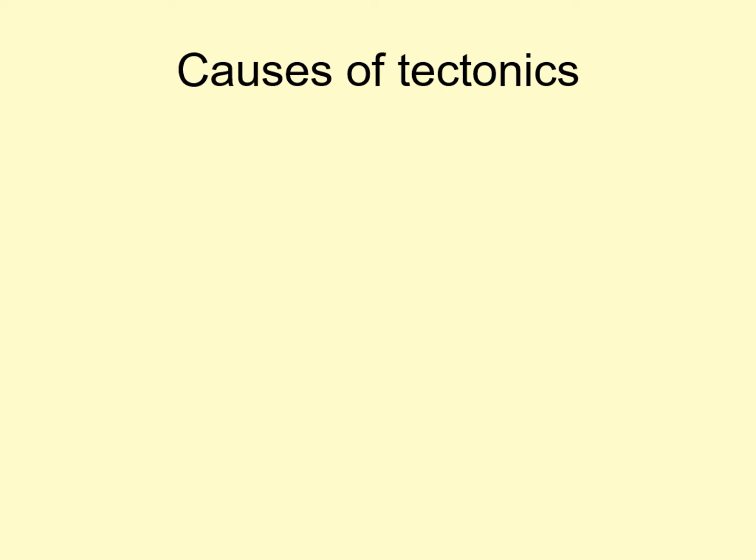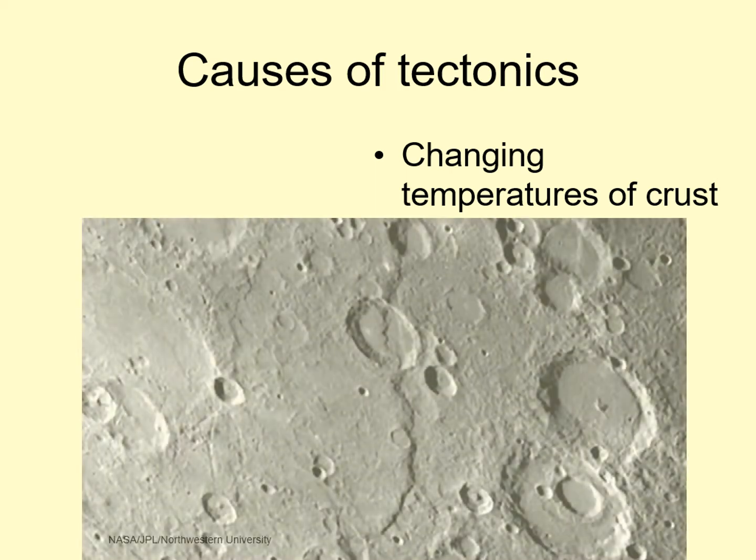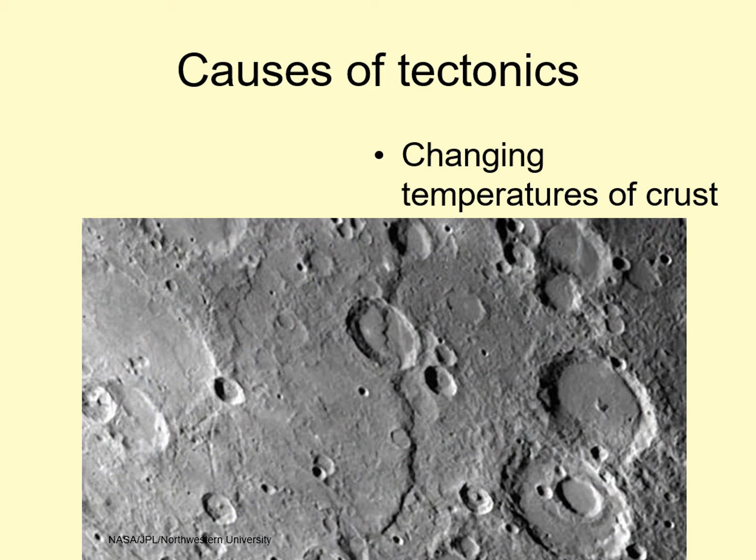Like volcanism, tectonics is related to the internal heat of the planet. There are several ways that internal heat can cause stretching and squeezing of the surface. One example comes from changing crustal temperatures. As the rocks below the surface cool, they contract. This causes the surface to buckle, producing ridges and scarps like this one on Mercury.